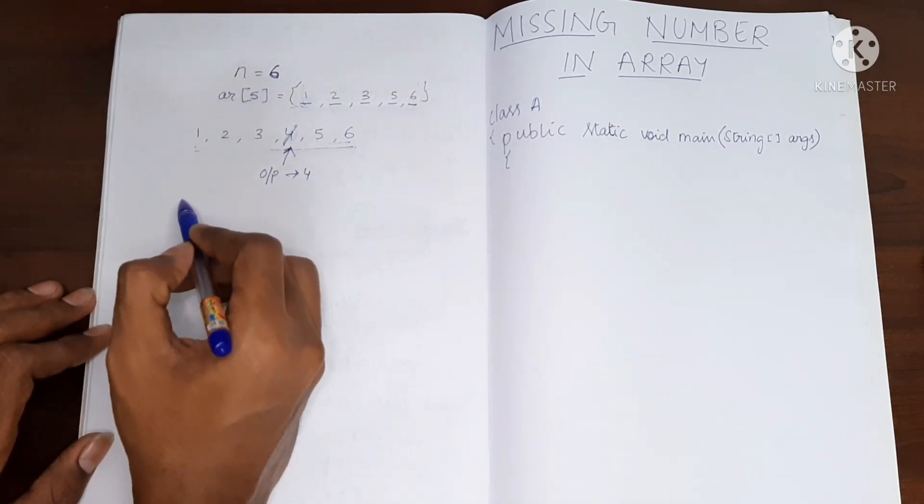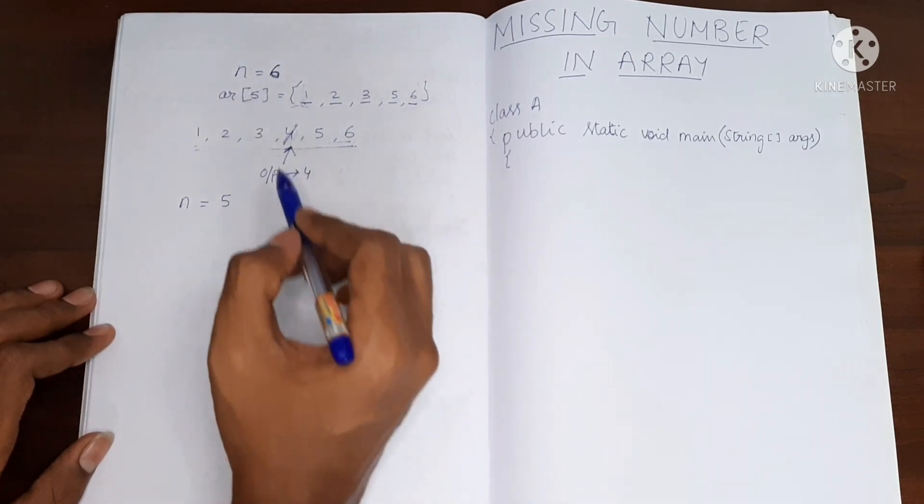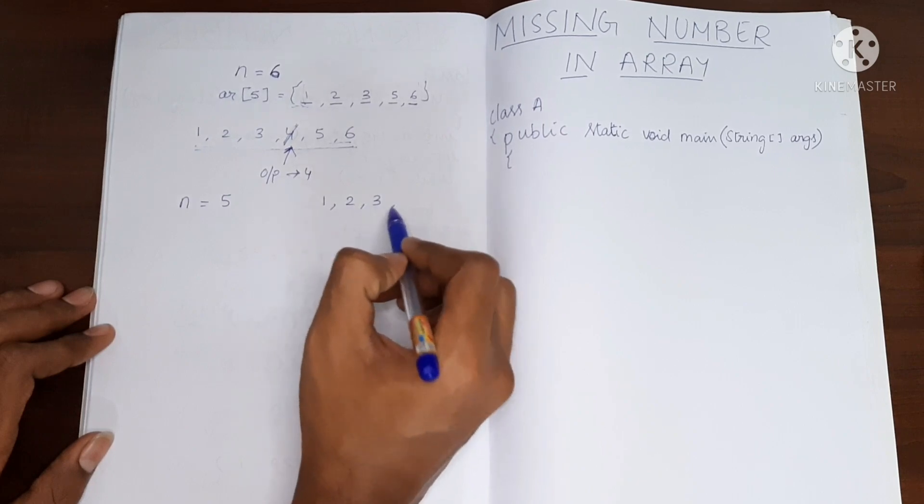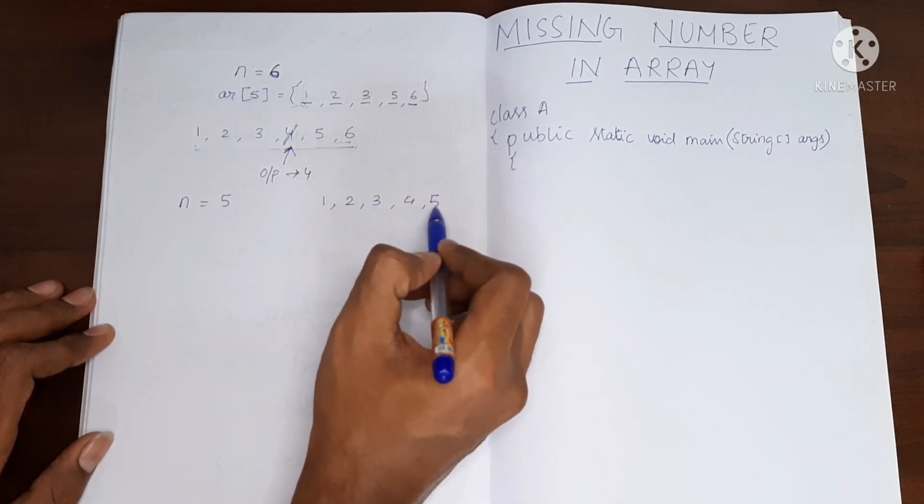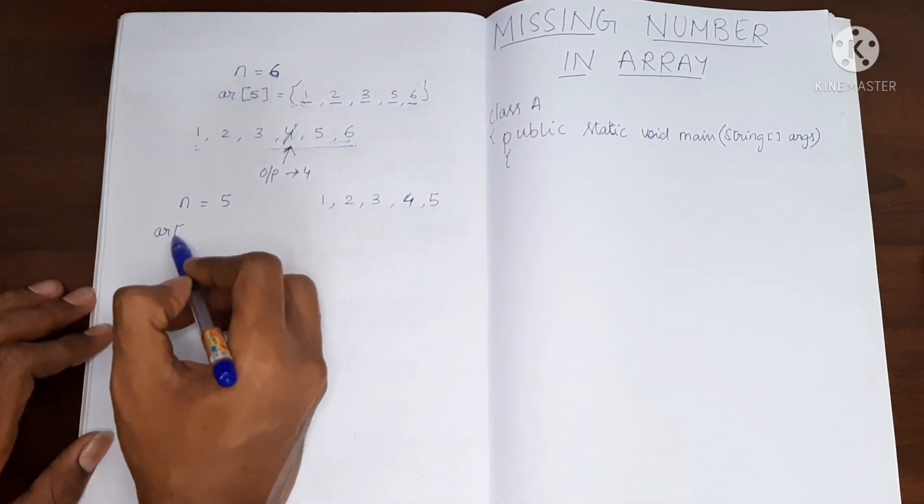So let me give you another example. If say n is 5, what are the possible numbers in the array? It will be from 1 to 5: 1, 2, 3, 4 and 5.